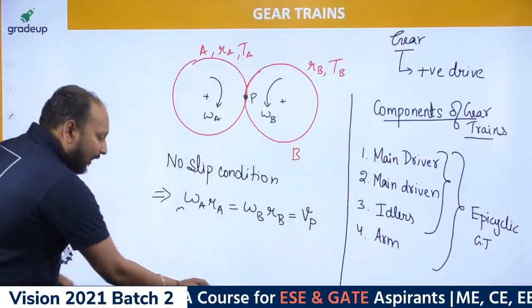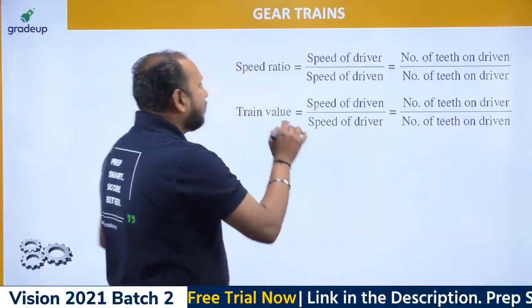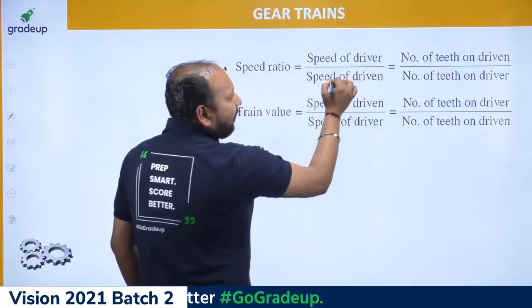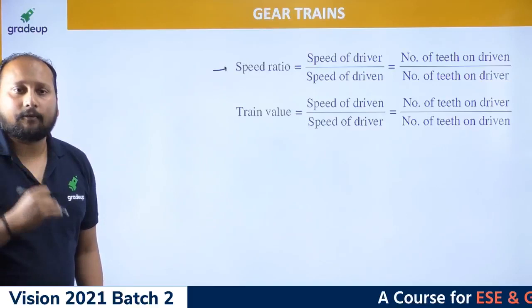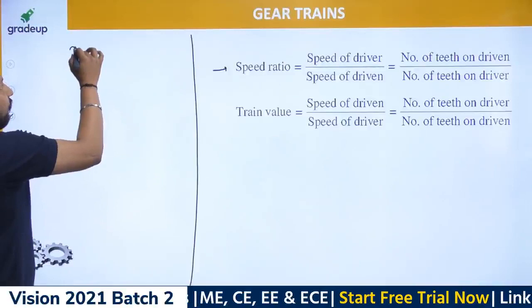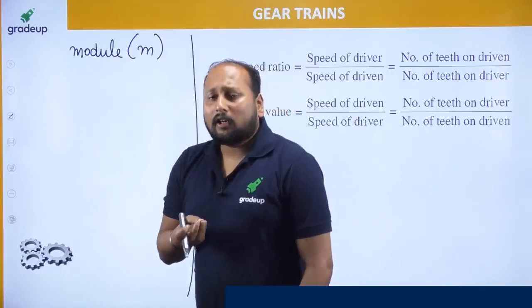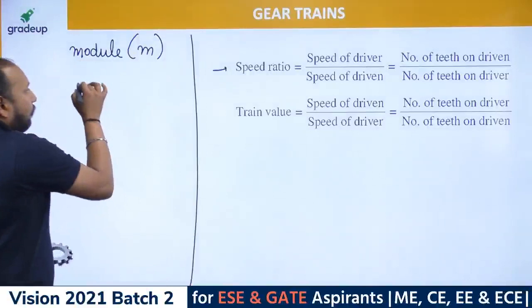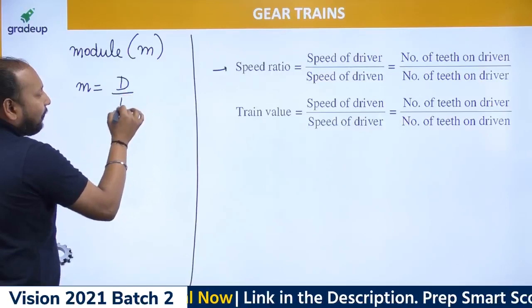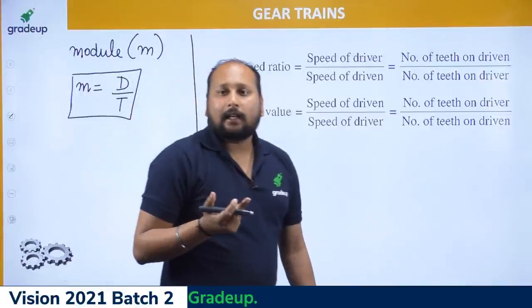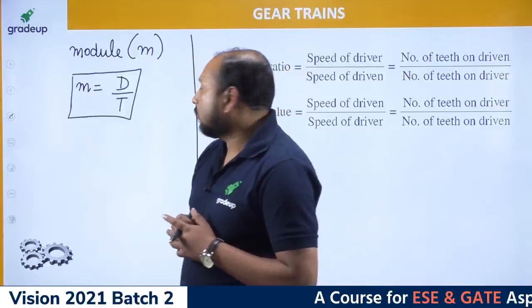Speed ratio is defined as the speed of the driver divided by the speed of the driven, or equivalently, the number of teeth of the driven divided by the number of teeth of the driver. The concept of module is important here — module is defined as the diameter of the gear divided by the number of teeth of that particular gear: m = D / T.